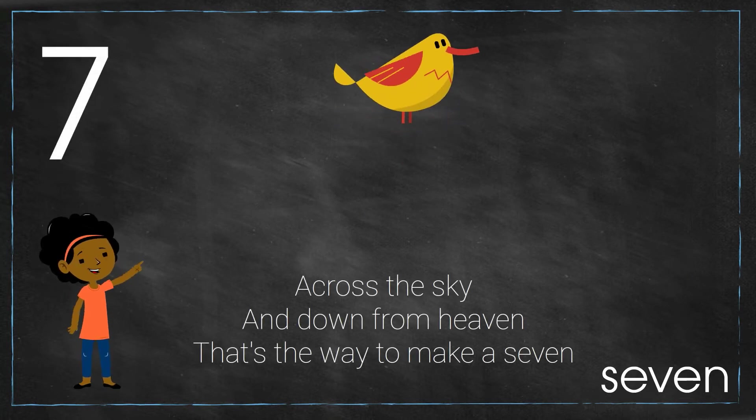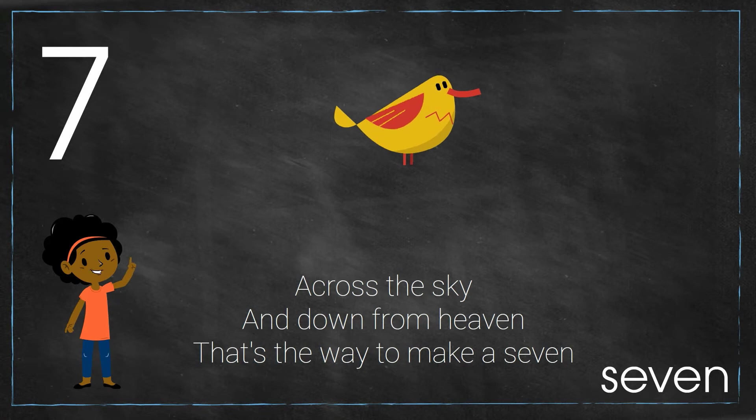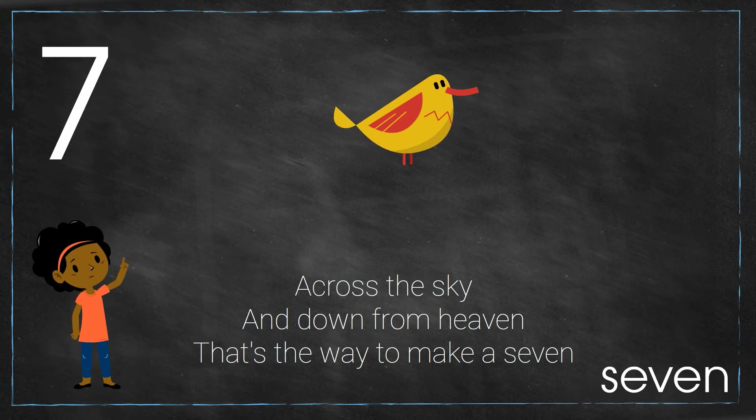Seven. How do we write the number seven? Across the sky and down from heaven, that's the way to make a seven.